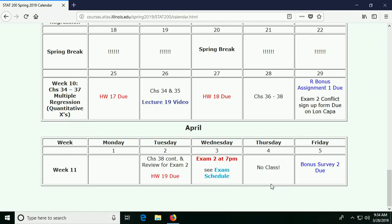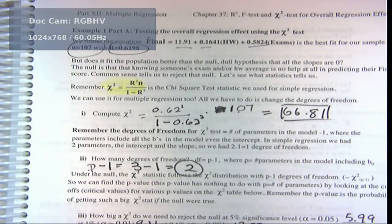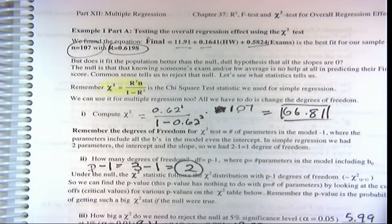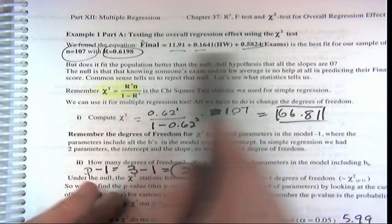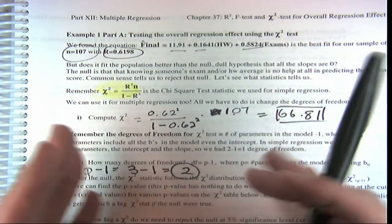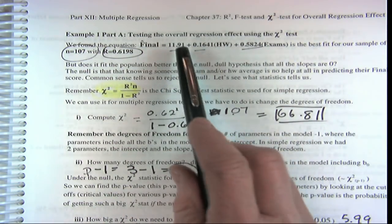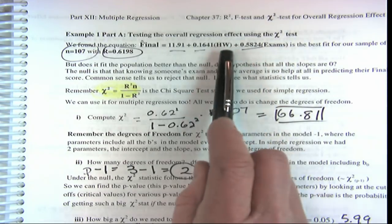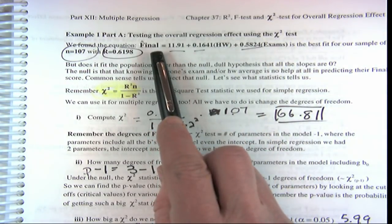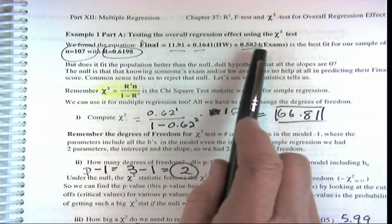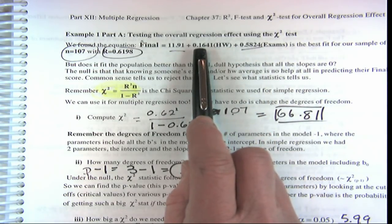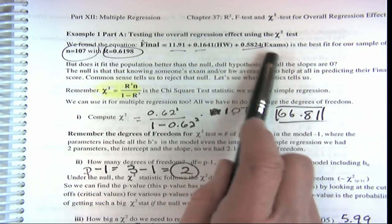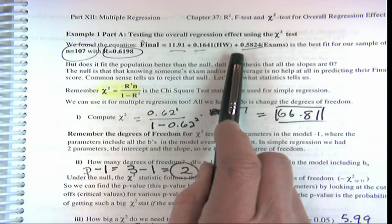So to the document camera. Now, recall that what we're doing here is the overall test in multiple regression — we're doing an overall test to see if any of these slopes, like for homework or exams, are significant. We're trying to predict finals. This is the example we've been using from homework and exam scores to see whether there's anything in our model at all. So it's the overall test for significance.